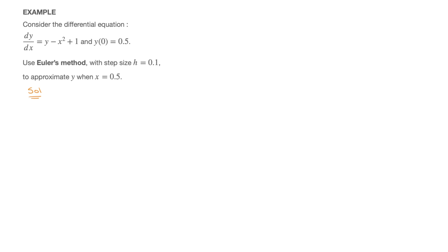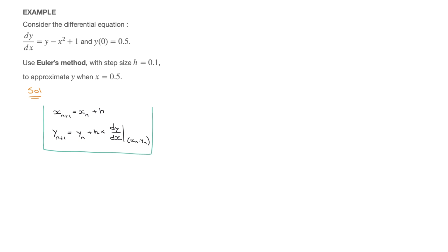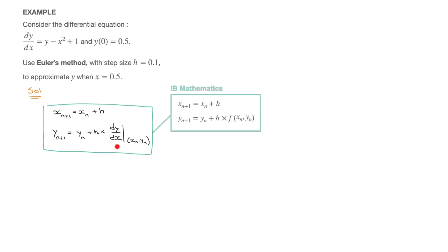Let me write SOL for solution, and start by reminding us of the recursive formulas for Euler's method. Those are: x_{n+1} equals x_n plus the step size h, and y_{n+1} equals y_n plus h times dy/dx evaluated at the point (x_n, y_n). If you're an IB mathematics student, your formula booklet writes h times f evaluated at (x_n, y_n), where f refers to the derivative.